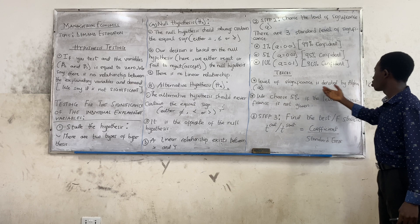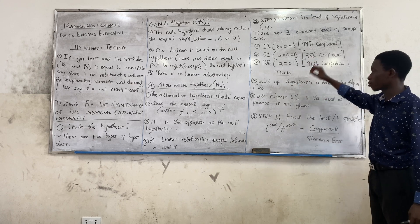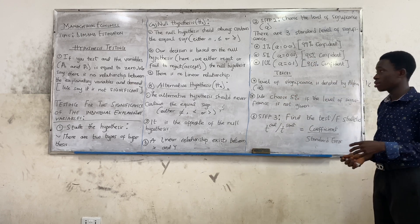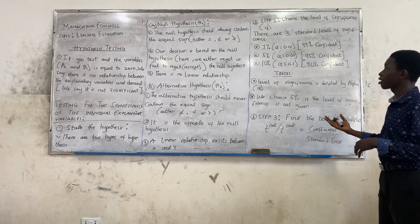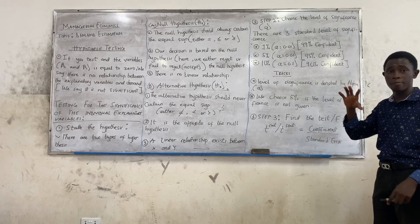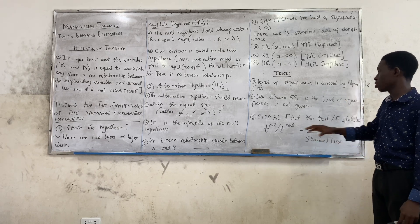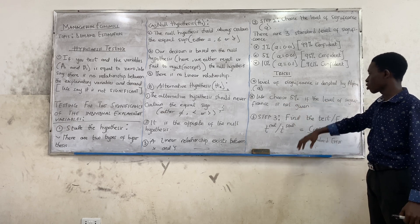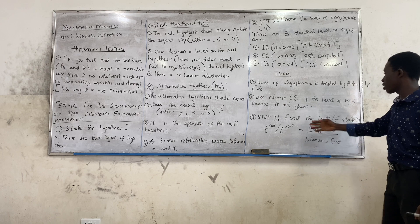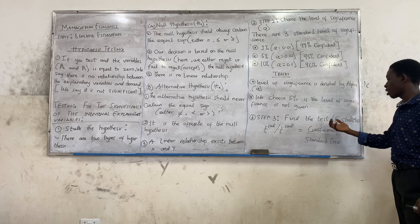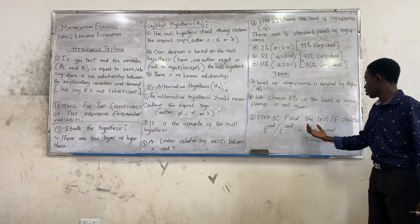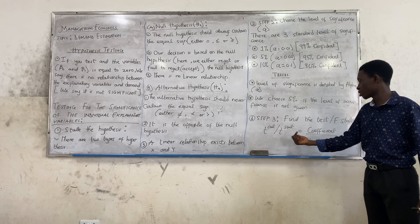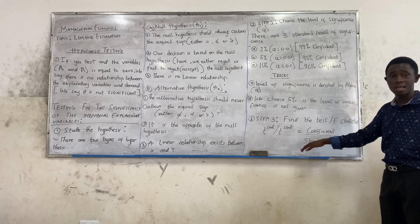The level of significance is denoted by alpha. Whenever you are dealing with a demand estimation question and there is no specific significance level given in the question, we assume 5%. We choose 5% if the level of significance is not given. Step three: find the test statistic. It is denoted by either T-calculated or T-stat, which equals the coefficient divided by the standard error.